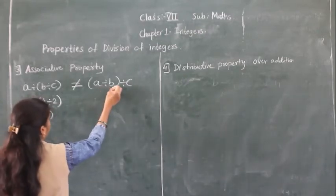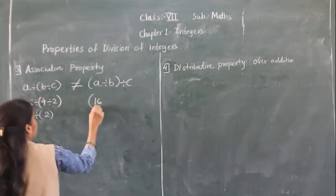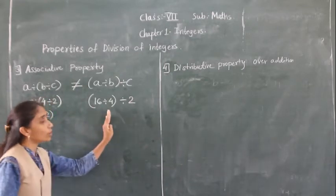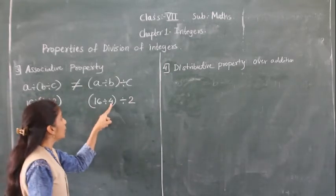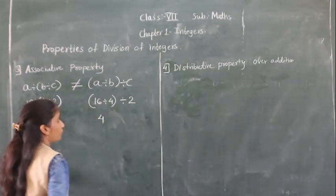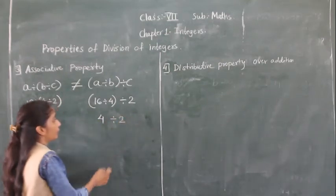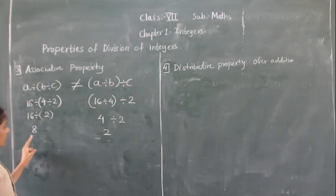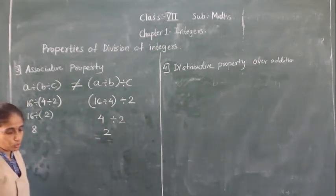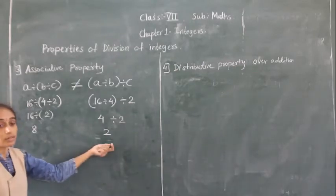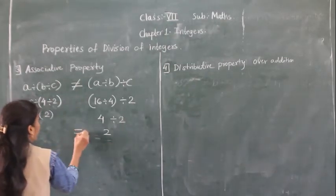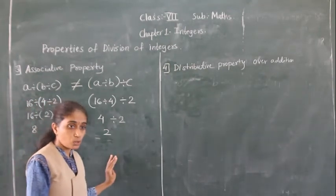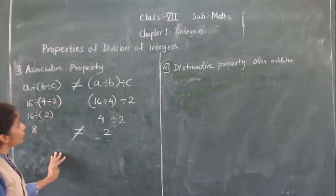Now solving bracket A divided by B divided by C: we solve the bracket first, so 16 divided by 4 equals 4, then 4 divided by 2 equals 2. Comparing both sides: one gives 8 and the other gives 2. They are not equal. So this property does not work in the division of integers.